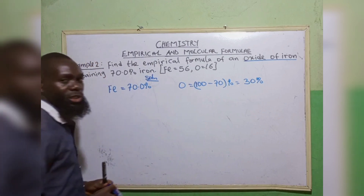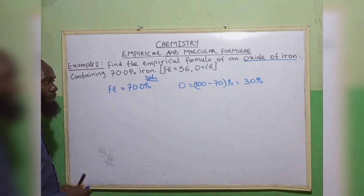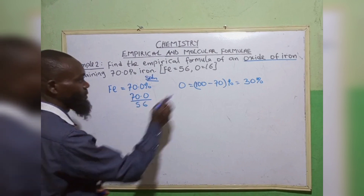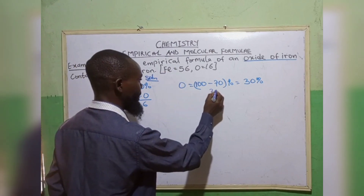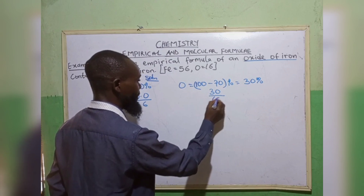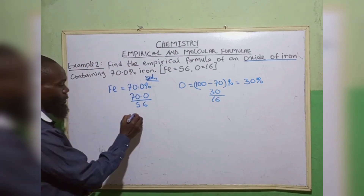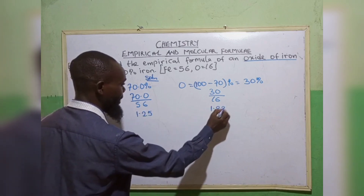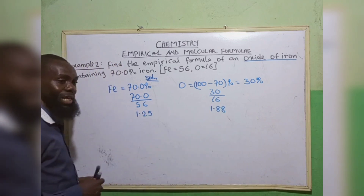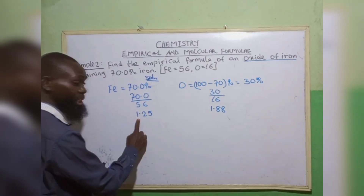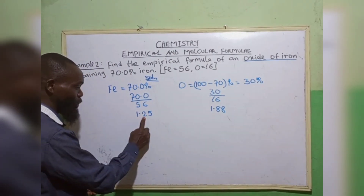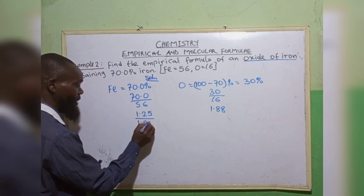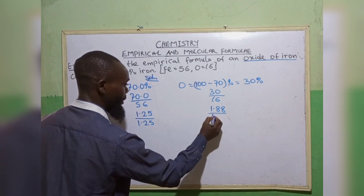The next step is to divide by the atomic mass: 70.0 divided by 56 for iron, and 30 divided by 16 for oxygen. When we divide this, we have 1.25 and 1.88. Then we divide by the smallest number. Looking at the decimal parts, 0.25 is less than 0.88, so we divide by 1.25: 1.25 divided by 1.25, and 1.88 divided by 1.25.